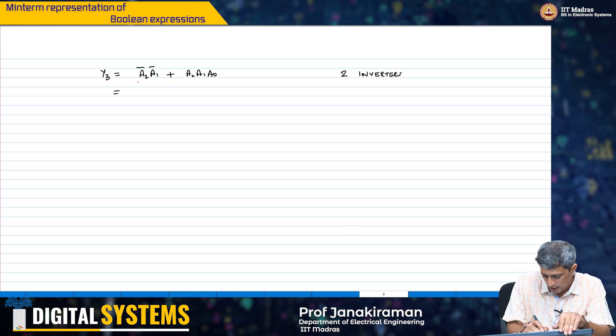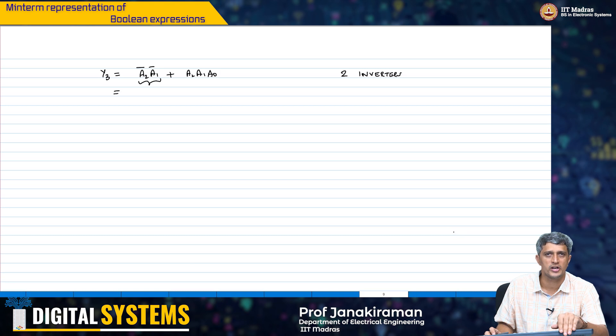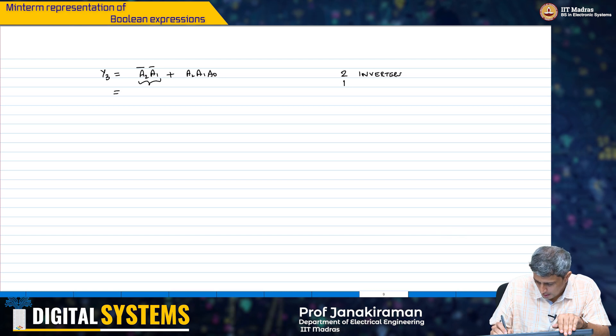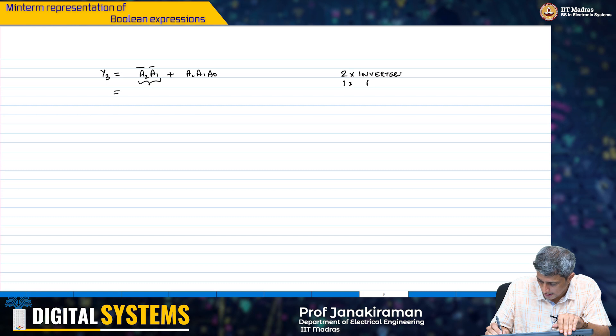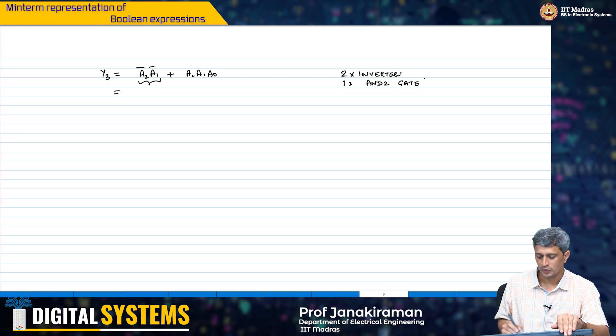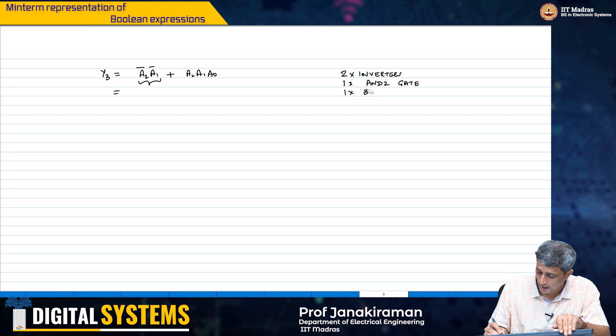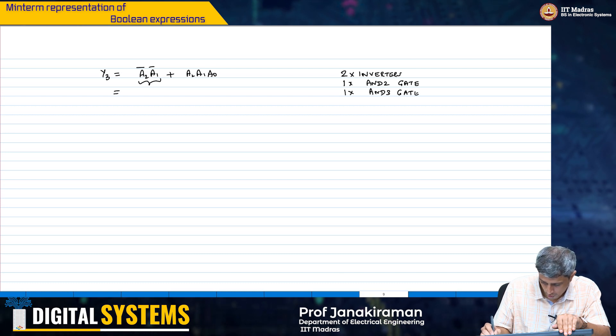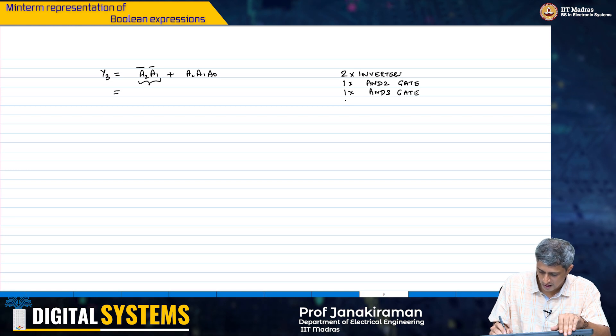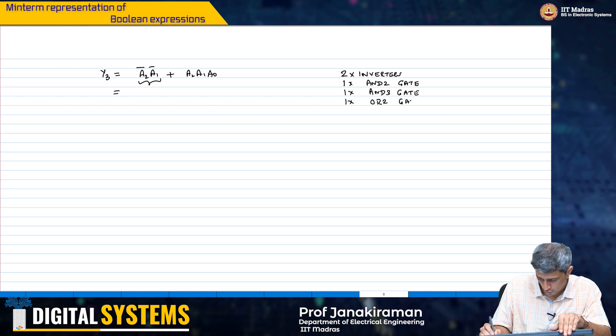Then to implement a2 bar into a1 bar, given that you have already generated the complement of the inputs, I need 1, 2 input AND gate. Then for a2, a1, a0, what do I need? I basically need a 3 input AND gate. And finally, I need an OR 2 gate.